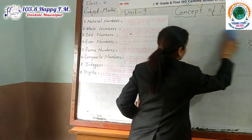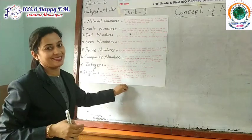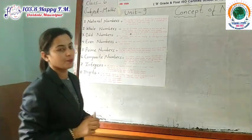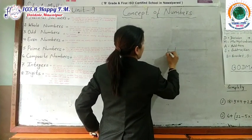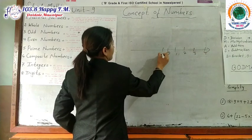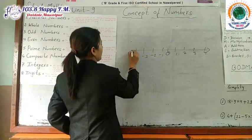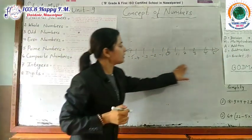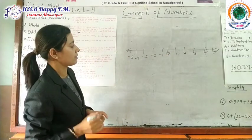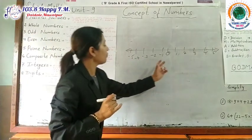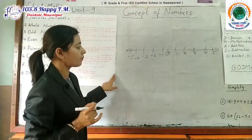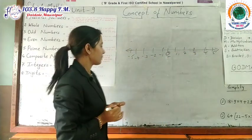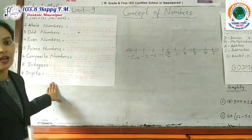The next topic is integers. Integers means all the positive and negative numbers including zero. All whole numbers, natural numbers, odd, even, prime, and composite numbers are integers. On a number line, numbers to the left of 0 are negative integers and numbers to the right of 0 are positive integers.